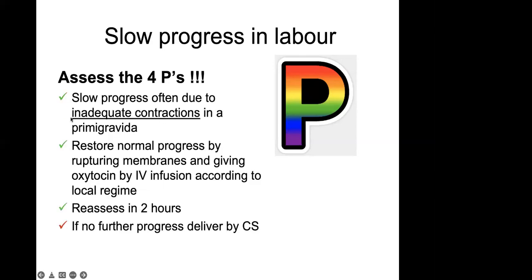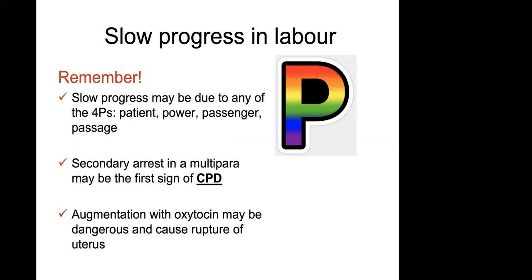The slow progress may sometimes be due to inadequate contractions. When the powers are truly insufficient, especially in a primigravida, we may restore normal progress by rupturing membranes and giving oxytocin, then reassessing two hours later. If we achieve good contractions but there's still no progress, we may want to deliver by cesarean. Keep in mind that slow progress may be due to any of the four Ps, and be worried about secondary labor arrest — a multipara who initially progressed and then gets stuck at six or seven centimeters may show the first sign of CPD even if she's had three NVDs before. Augmentation with oxytocin in these scenarios is extremely dangerous and may cause uterine rupture.